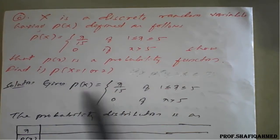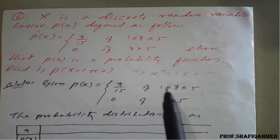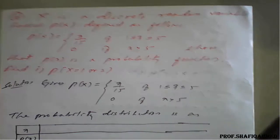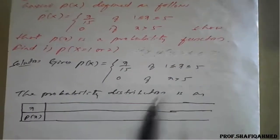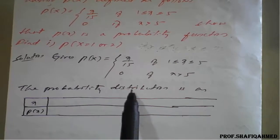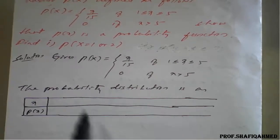The given P of X I have taken X upon 15 if X greater than equal to 1 and less than equal to 5 and 0 in other case. That is greater than 5. We need to prepare a probability distribution table which is required.